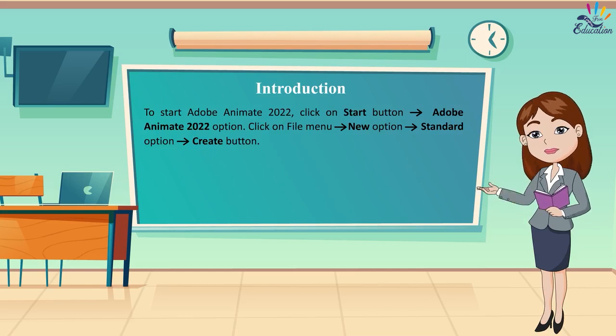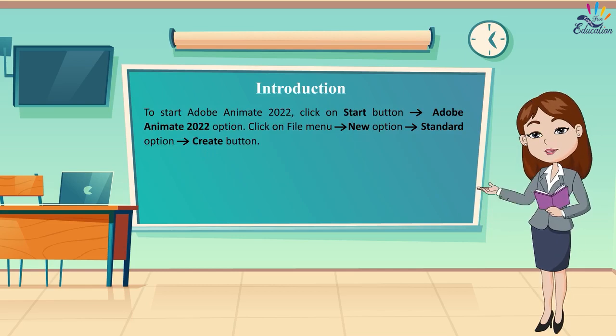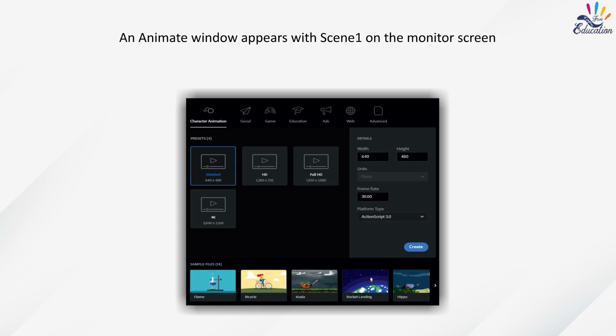To start Adobe Animate 2022, click on the Start button, select Adobe Animate 2022, click on the File menu, select New, choose the Standard option, and click Create. An Animate window appears with Scene 1 on the monitor screen.